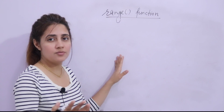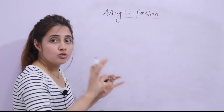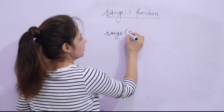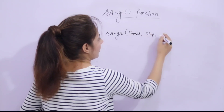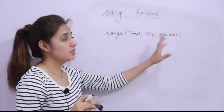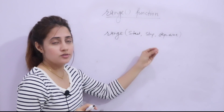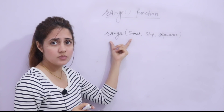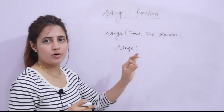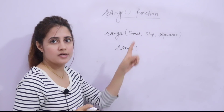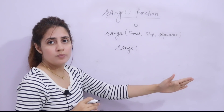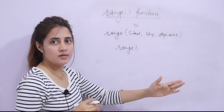The range function will generate a series of numbers. Let me show you the syntax first. You write range, and it has basically three arguments: start, stop, and step size. These three are not all compulsory — it's not mandatory to give all three arguments. Start means the starting point of the series and it is completely optional; by default it is zero. Stop means where to stop the series, and it is compulsory.